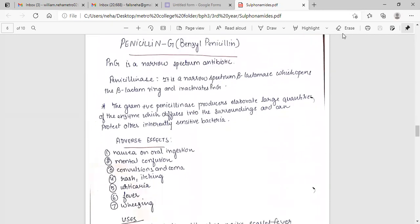Penicillin G, benzyl penicillin. Penicillin G is a narrow spectrum antibiotic. Penicillinase is a narrow spectrum beta-lactamase which opens the beta-lactam ring and inactivates penicillin G. The gram-positive bacteria produce large quantities of enzyme which diffuses into the surrounding and can protect other inherently sensitive bacteria.